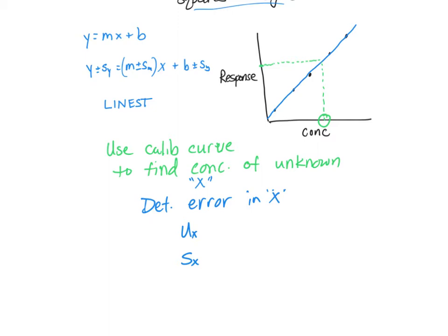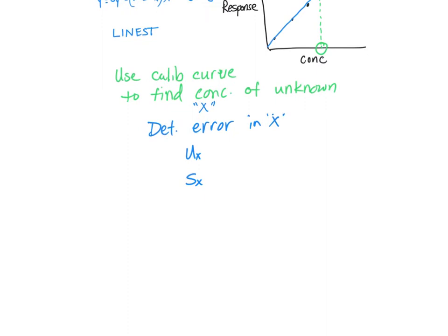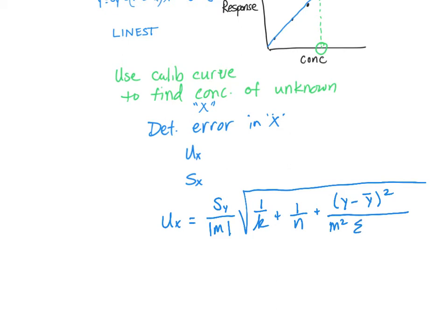The error associated with the unknown from our calibration curve can be calculated based on this equation. We'll do u sub x is equal to the error in y over the absolute value of the slope times the square root of: 1 over k plus 1 over n plus (y minus y bar) squared over m squared times the sum of (x sub i minus x bar) squared.